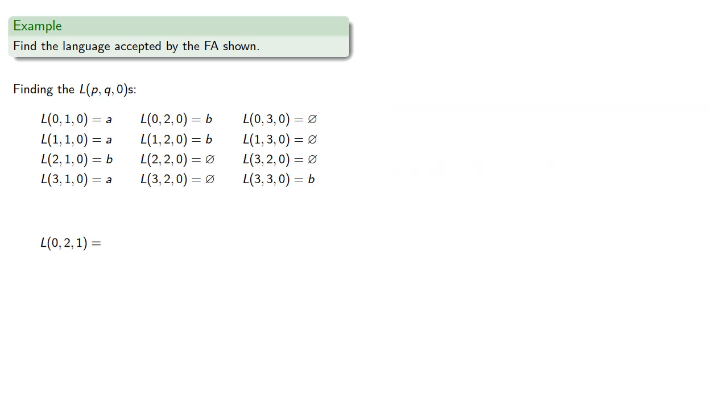Likewise, if we want to go from 0 to 2 through 1 or less, that's from 0 to 2 through 0 or less, go to 1, loop, and then on to 2, and filling in our details, go to 0 to 2 through 1.